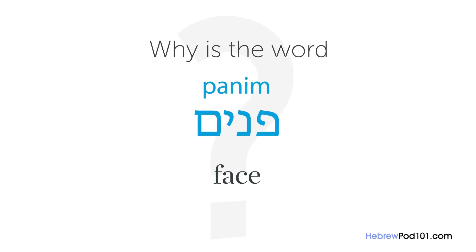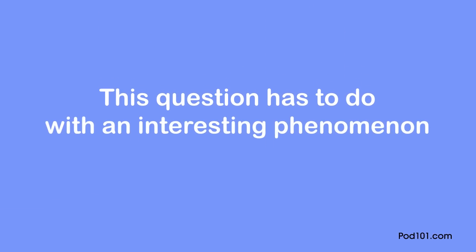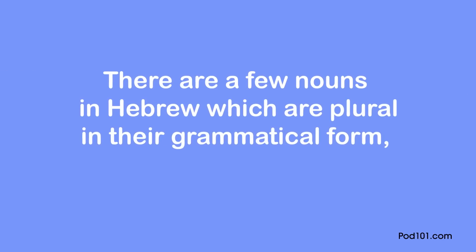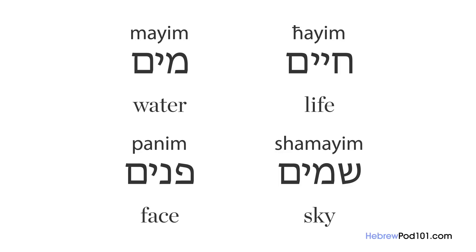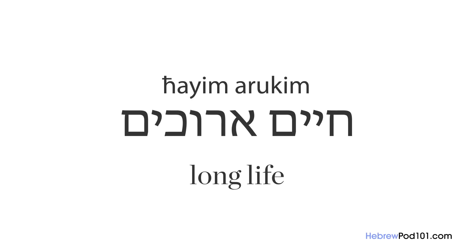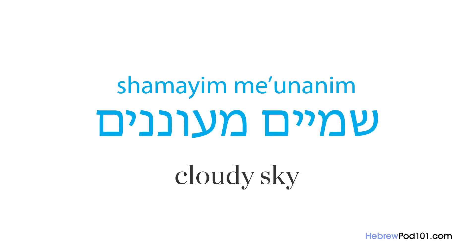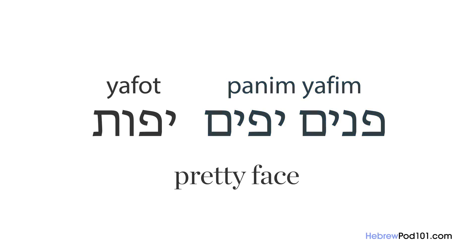The question for this lesson is: why is the word 'panim' (face in Hebrew) plural? There are a few nouns in Hebrew that are plural in grammatical form but singular conceptually. The four main nouns are: life — 'chayim,' water — 'maim,' sky — 'shamayim,' and face — 'panim.' All have typical plural masculine endings ('-im'). The adjectives attached to them take a plural form as well: 'chaim arukim' — long life, 'maim chamim' — hot water, 'shamayim me'unanim' — cloudy sky, 'panim yafim' or 'yafot' — pretty face.